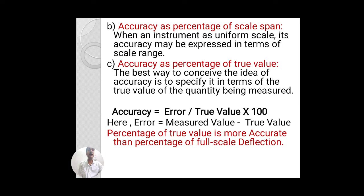When an instrument has a uniform scale, its accuracy may be expressed in terms of scale range. The third and best way to express accuracy is as a percentage of true value. Specifying accuracy in terms of the true value of the quantity to be measured gives the most accurate result, and is the best way to convey the idea of accuracy — related to the true, specified, or standard value.